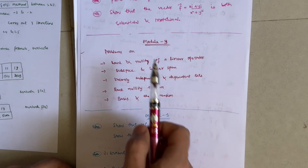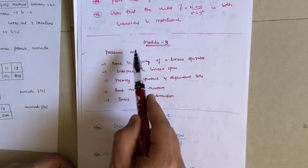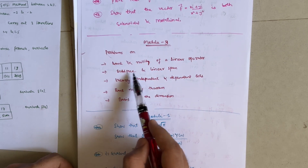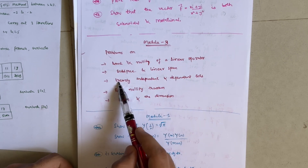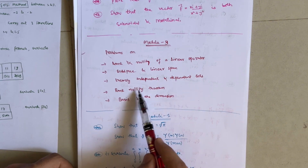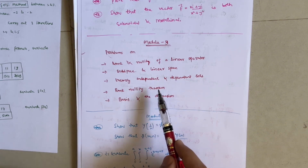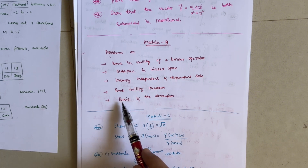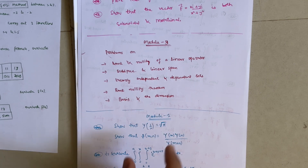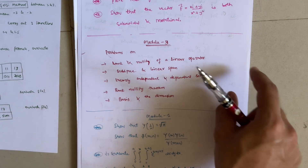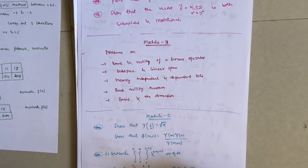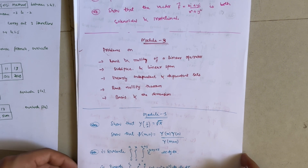For Module 3, focus on rank and nullity of a linear operator, subspace and linear span problems, linearly independent and dependent sets, the Rank-Nullity theorem, and problems on basis and dimension. Make sure you refer to previous year question papers and model question papers to understand what type of questions are asked from Module 3.